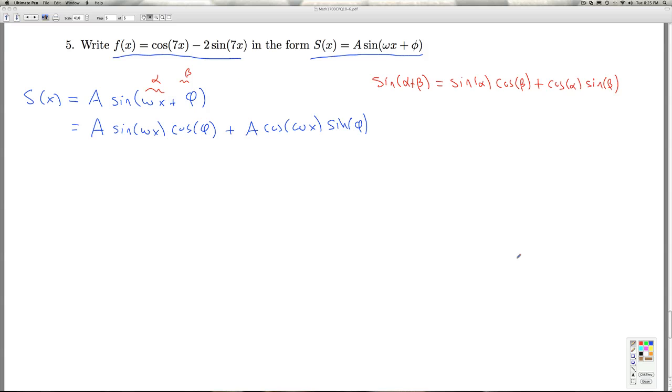What I'm trying to do is match it up with f of x equals cosine 7x minus 2 sine 7x. Since these two expressions have to be equal for all x, I'm going to match up the coefficients of cosine and sine in each expression. The argument of the trig functions here are ω x. This tells me straight away that ω is 7.